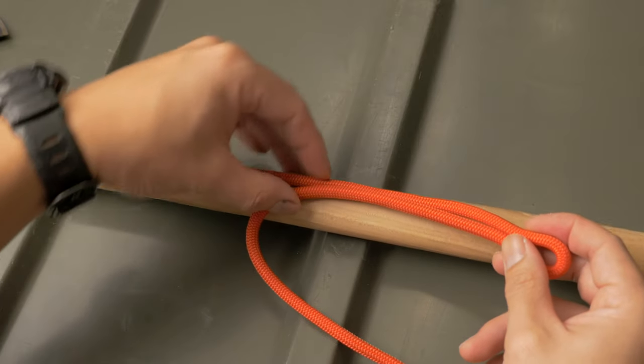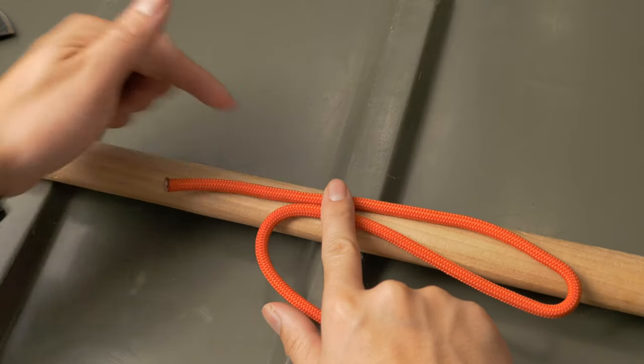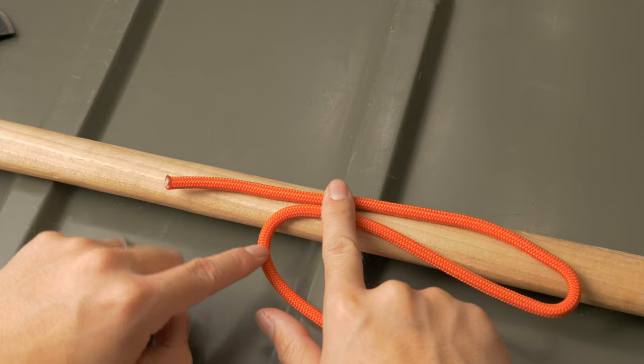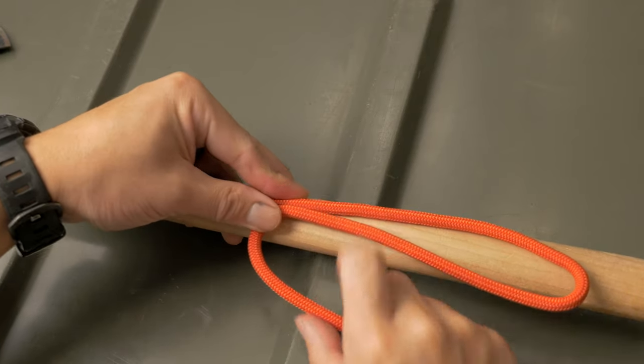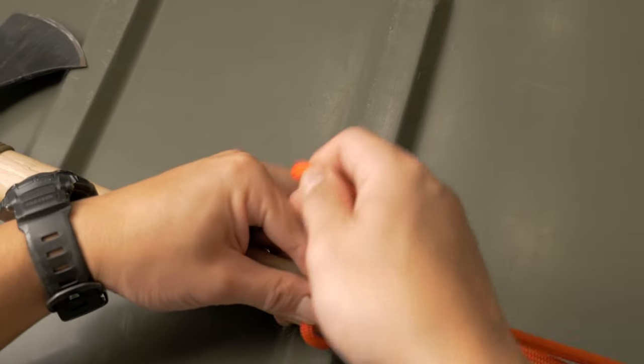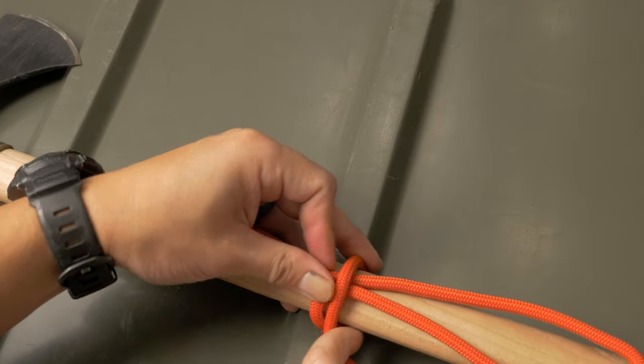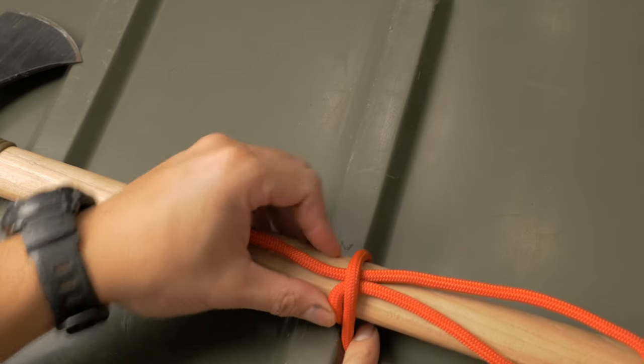You're going to take the bite and lay it on the object that you're going to be whipping around with the tail end extending just a little bit past the working end. Once it's set in place, you're going to take the working end and wrap the rope or the line around the object and also the bite.